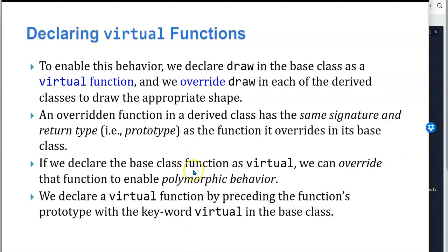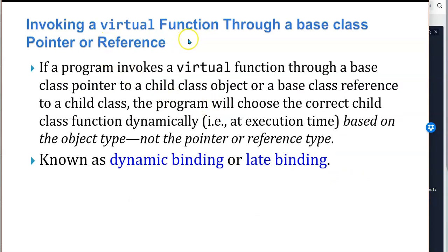To enable polymorphic behavior, we declare functions of the base class that we want to be overridden as virtual functions, and we override draw in each of the child classes. An overridden function in the derived class has the same signature and return type as the function it overrides in its base class. If we declare the base function as virtual, we can override that function to enable polymorphic behavior. We declare a virtual function by preceding the function's prototype with the keyword virtual in the base class. When a program invokes a virtual function through a base class pointer to a child class object or a base class reference to a child class, the program chooses the correct child class function dynamically based on the object type, not the pointer or reference type.